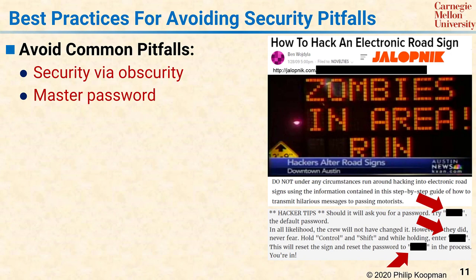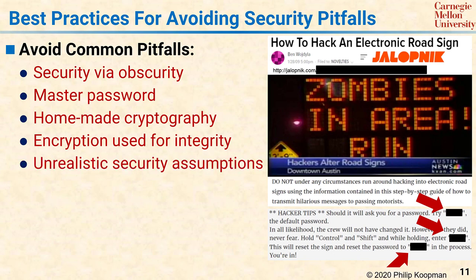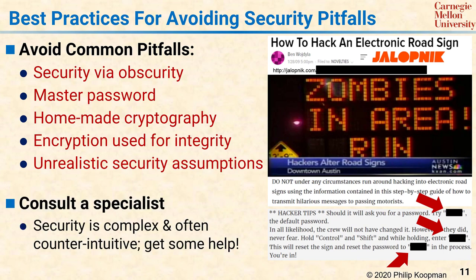Back to the list of best practices: you should avoid using homemade or proprietary cryptography because it is almost always flawed. You should use encryption for secrecy, but use digital signatures or secure hashes for integrity and authentication. You should also make sure your security assumptions are realistic — for example, never assume that a user will change a default password if they have a choice not to. In the end, getting security right is very subtle and complex. For systems in which a security lapse can result in a high-risk situation, you should get security advice from an expert.